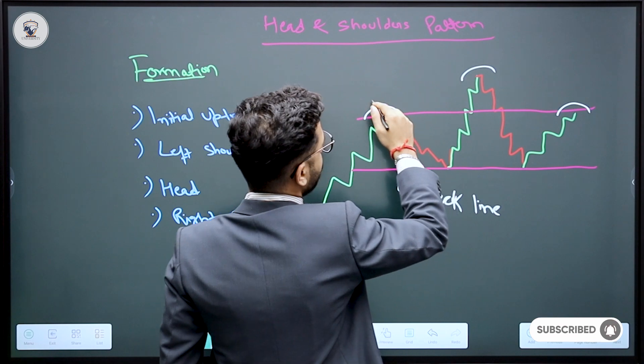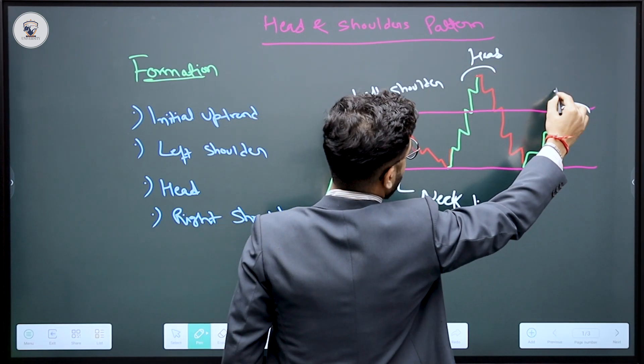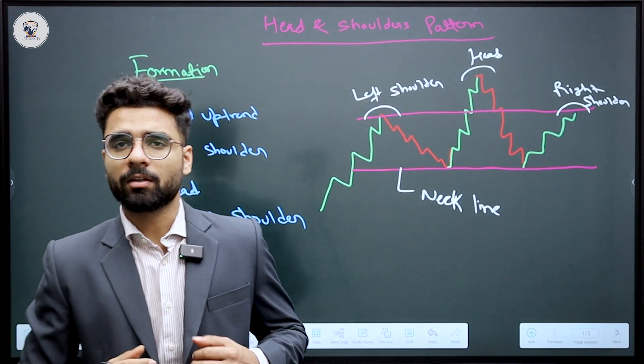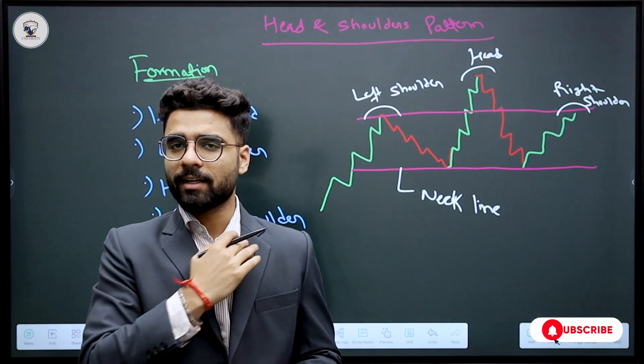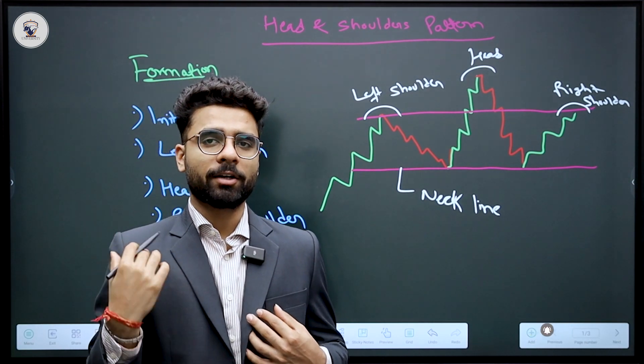This is a neckline. Why is this neckline? Now this is your whole right shoulder, this is your left shoulder, and this is the head. Left shoulder, head, right shoulder. So what is our body structure? This is one neckline.